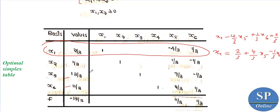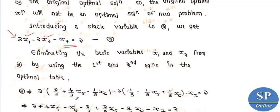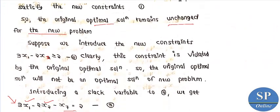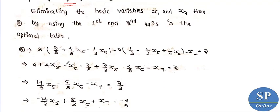Similarly, x2 equals 1/3 minus (1/3)x5 plus (1/3)x6. Substituting x1 and x2 into the new constraint and adding slack variable x7, we obtain: minus (1/3)x5 plus (5/3)x6 plus x7 equals minus 2/3.